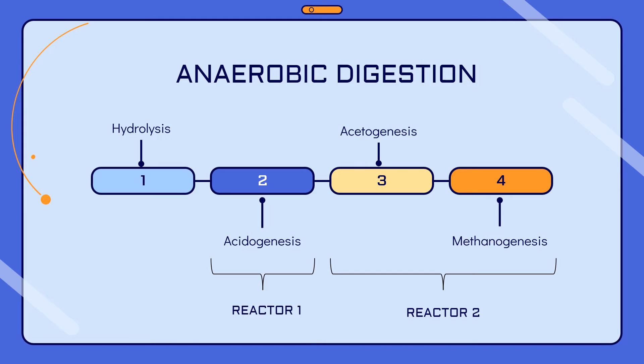Anaerobic digestion consists of four stages: hydrolysis, acidogenesis, acetogenesis, and methanogenesis. In reactor 1, only acidogenesis will take place since hydrolysis is neglected, meanwhile in reactor 2, only acetogenesis and methanogenesis will take place.